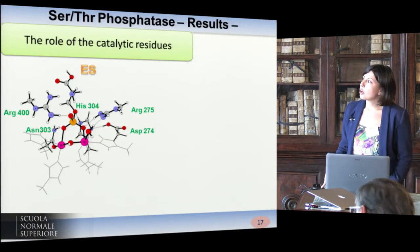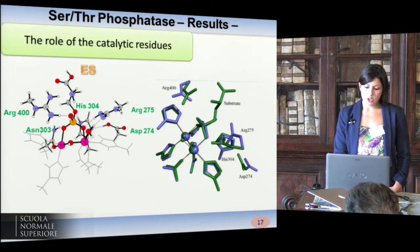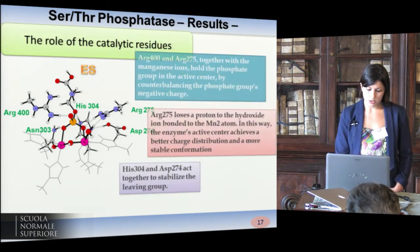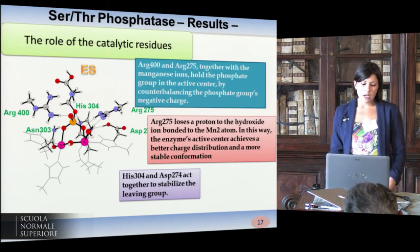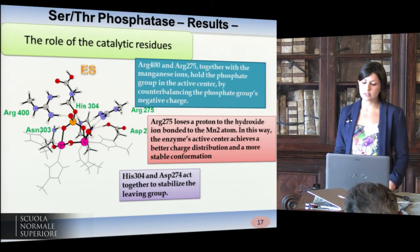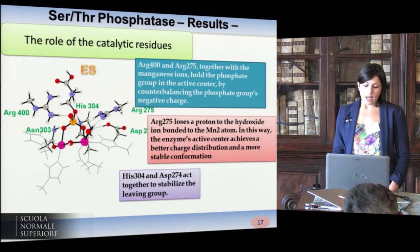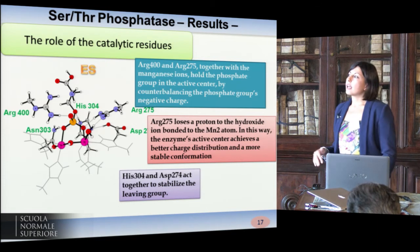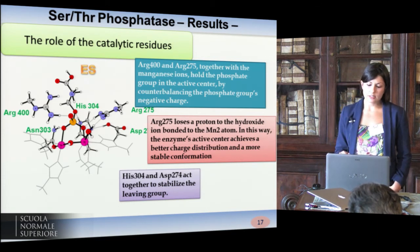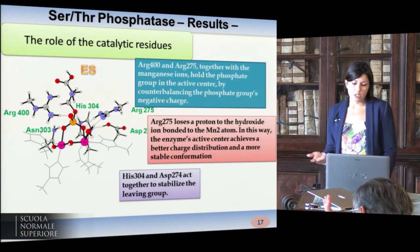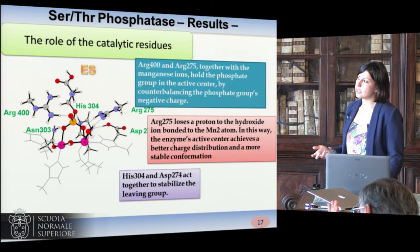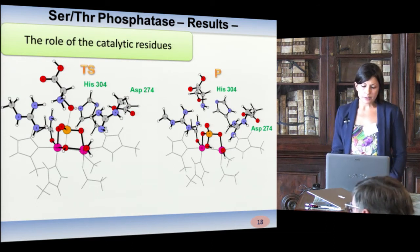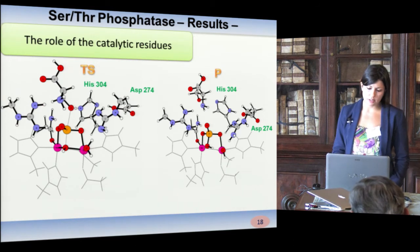Just to conclude, I want to show the role of the catalytic residues. This is the superposition between our enzyme-substrate complex and the X-ray structure. The role of the two arginines, together with the manganese ions, is to counterbalance the phosphate's negative charge. Moreover, arginine 275 protonates the hydroxide coordinated to the second manganese, so the enzyme's active site achieves a better charge distribution. Histidine 304 and aspartate act together to stabilize the leaving group, and the same roles are seen in the transition state and in the product.